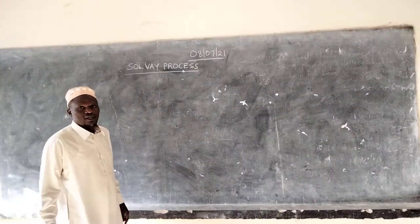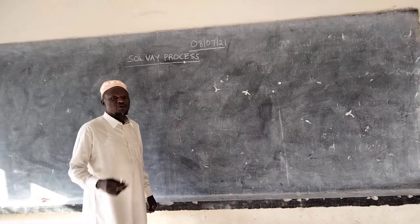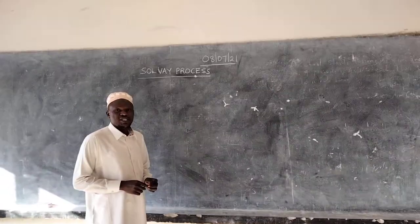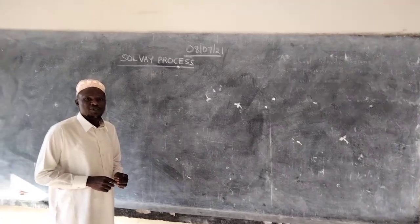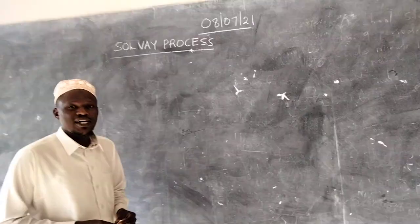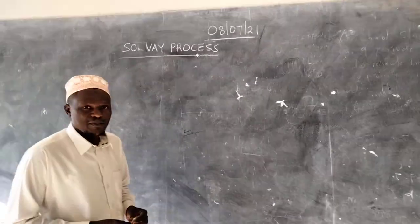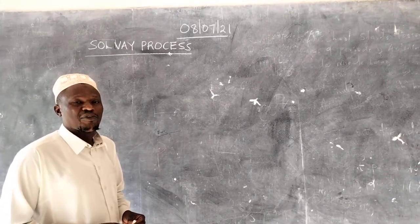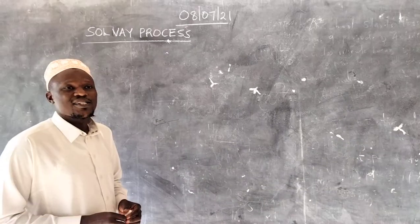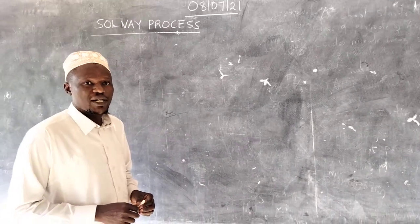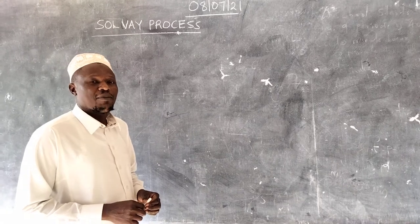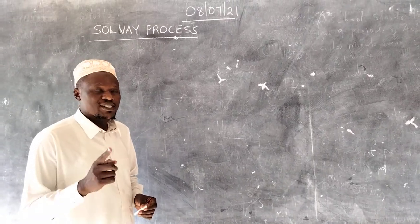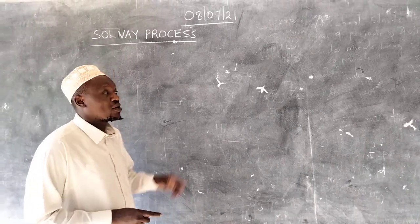Good afternoon class. Today we are going to learn about the Solvay process. The Solvay process is one of the processes used to manufacture sodium carbonate. Sodium carbonate can also be manufactured from trona — that is the easiest way. When you are in a place where there is no trona, you can manufacture sodium carbonate using the Solvay process.